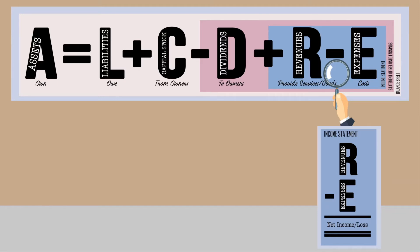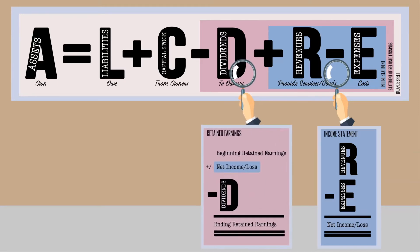The net income or loss is then either added or subtracted from the beginning retained earnings, and then dividends is subtracted to give you your ending retained earnings.